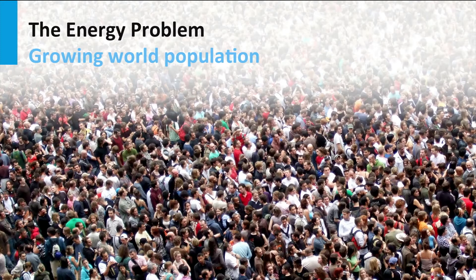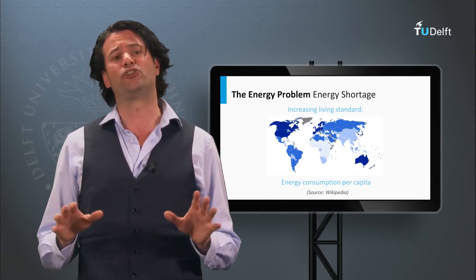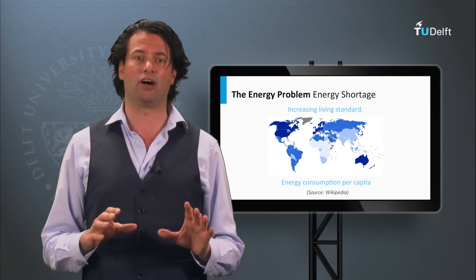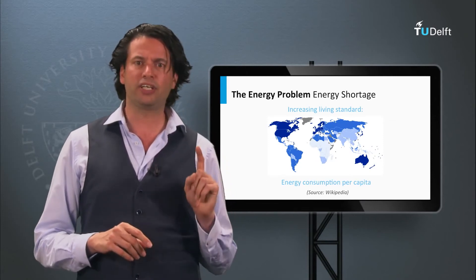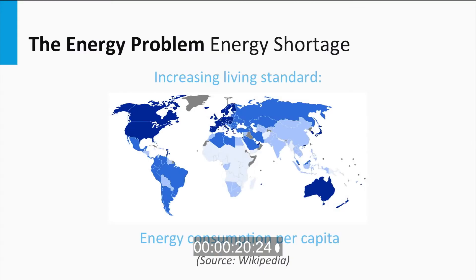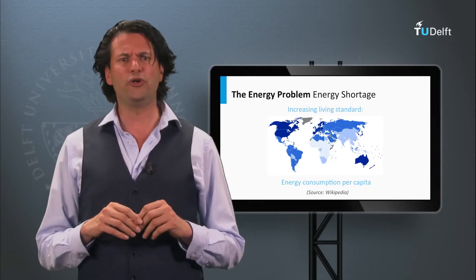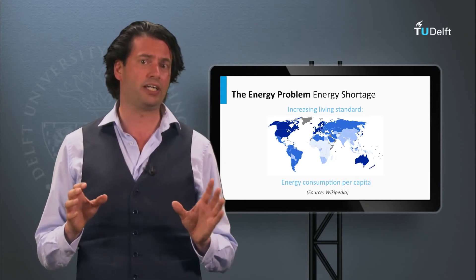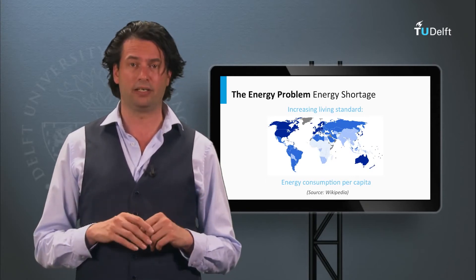All these people will need energy, which increases the global energy demand. In addition, the energy consumption per capita is linked to the living standard of a country. In 2010 in the US, around 230 kilowatt hours of energy per capita per day was used, whereas countries in Africa like Nigeria only used one-tenth of this energy, around 23 kilowatt hours per day per capita.